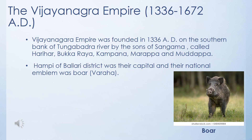The Vijayanagara Empire was founded in the year 1336 AD on the southern bank of the Tungabhadra River by the sons of Sangamma: Harihara, Bukkaraya, Kampana, Marappa and Mudappa. Hampi of Bellari district was their capital, and their national emblem was the Boar, also known as Varaha. On the right side of the screen you can see the image of the Boar.